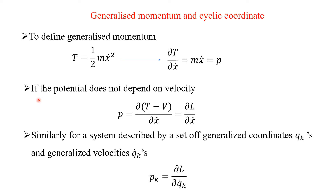Let us assume that the potential does not depend on velocity. Generally, that is the case, as we have seen in Lagrangian mechanics also. Since potential is independent of x-dot, I have included the potential here as minus V, because it will not affect the result. So P can be written as the partial derivative of T minus V over partial x-dot. You know very well that T minus V, kinetic energy minus potential energy, is nothing but the Lagrangian L.